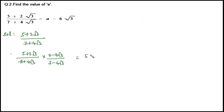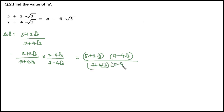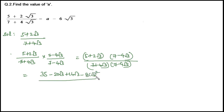So this equals (5 + 2√3)(7 − 4√3) divided by (7 + 4√3)(7 − 4√3). Let's multiply: 5 × 7 = 35, minus 5 × 4 = 20√3, plus 2√3 × 7 = 14√3, minus 2 × 4 × (√3)² = 8 × 3. The denominator is in the form (A + B)(A − B), so it is 7² − (4√3)².